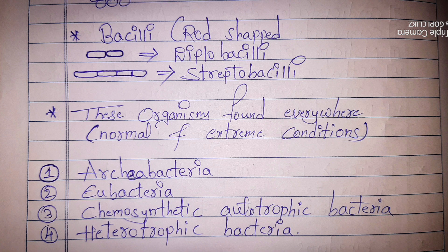Bacilli are rod-shaped microorganisms or bacteria. If two bacilli are joined together, we call it diplobacilli. If these bacilli bacteria are linear and more in number, we call it streptobacilli. Monerans are found everywhere — in normal and in extreme conditions as well.